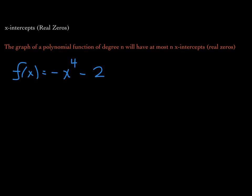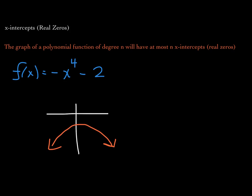Consider this quartic polynomial function, which will have at most 4 x-intercepts or 4 real zeros. Looking at the graph, it is going downward — that's because of the negative leading coefficient with even degree 4, so the end behavior goes downward on both sides. The y-intercept is negative 2. As a result, this function has no real zeros and no x-intercepts.